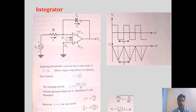The current flowing through the capacitor will be treated as IF, and we have connected the input VI to the inverting terminal of the op-amp.